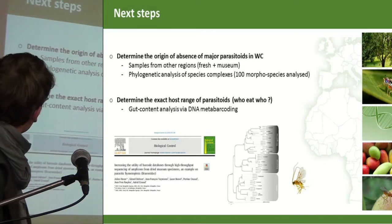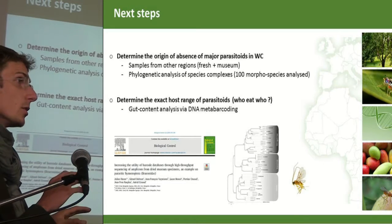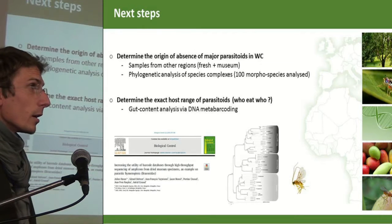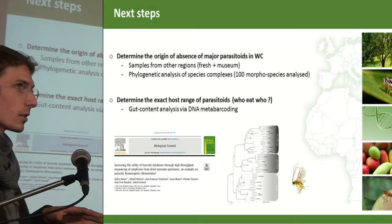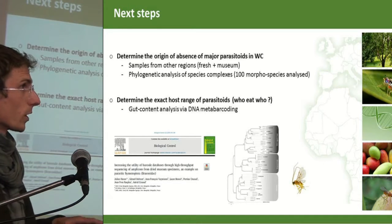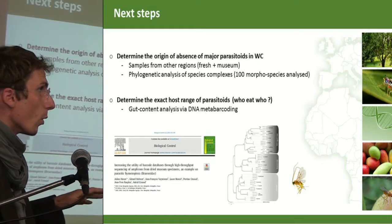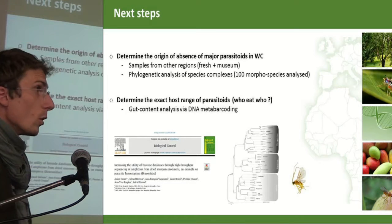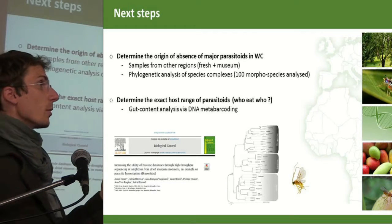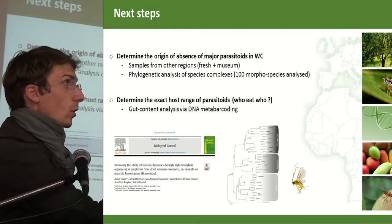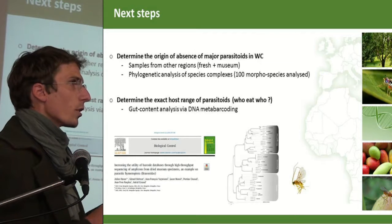For next steps, we want to investigate in more detail the origin of this difference in distribution. We are sampling parasitoids from different regions across Africa and other districts in South Africa to look for cryptic species adapted to specific environments or fruit fly species. We are sequencing specimens from fresh material and museum collections to cover more samples. We are also using metabarcoding to reconstruct the trophic network and determine who parasitizes whom.